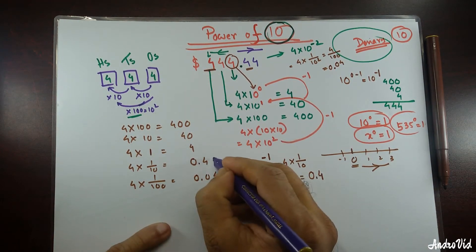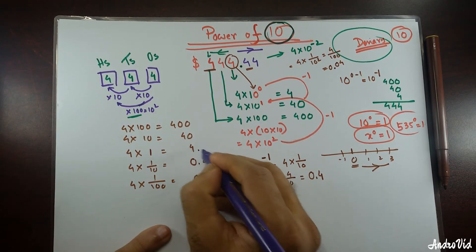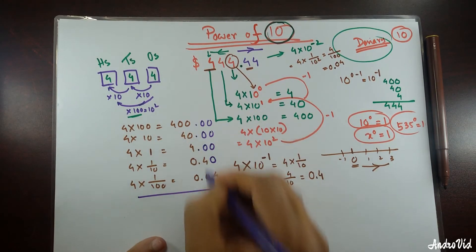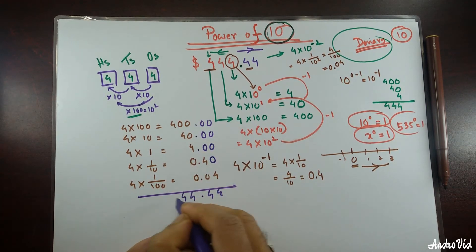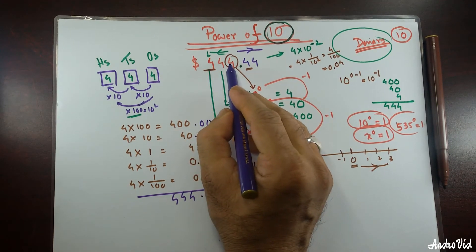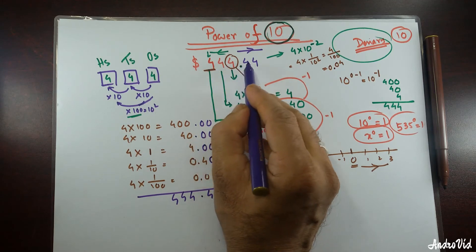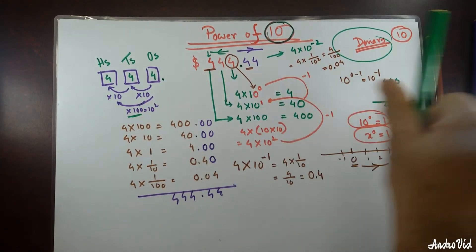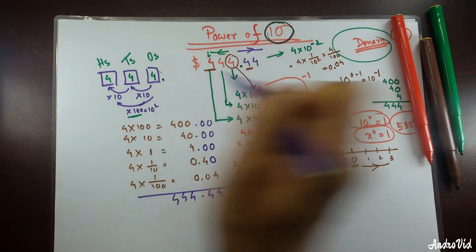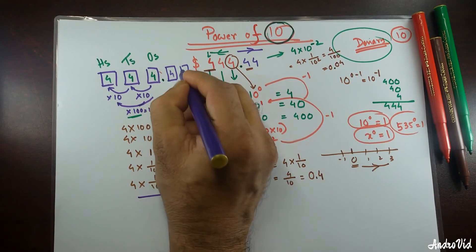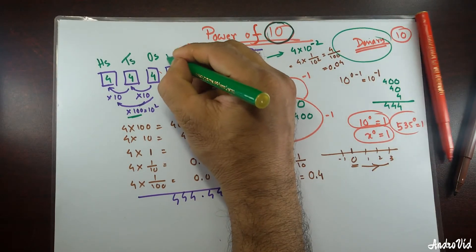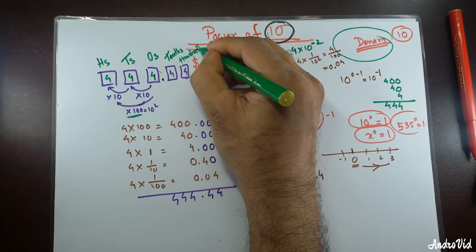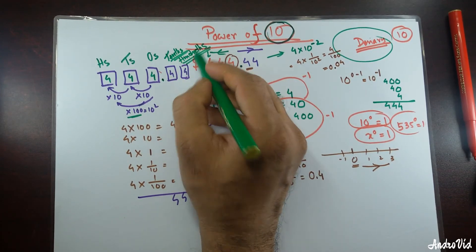When we add it all together: 400 plus 40 plus 4 plus 0.4 plus 0.04, we get 444.44. The place to the right of the decimal point we call the tenths place — that means divided by 10. The next place we call the hundredths place — divided by 100. So 444.44 has 4 in the tenths place and 4 in the hundredths place.